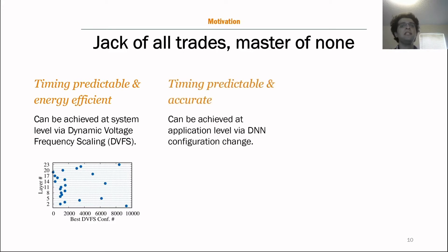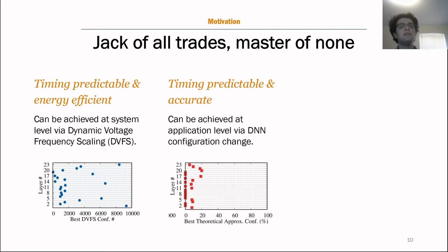So what about achieving timing predictability and good accuracy? This can only be done at application level by changing the application configuration. However, different layers have different sensitivities to approximation. Here, speaking theoretically to achieve a 12 millisecond deadline in AlexNet, here's the optimal approximation value that needs to be achieved for each layer on a Jetson TX2. For more information on this, you can read our APNet paper published in RTSS. So already we see that existing application level and system hardware level solutions need to change for DNNs.